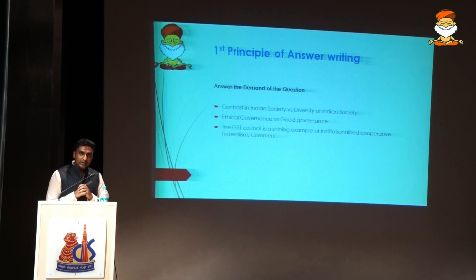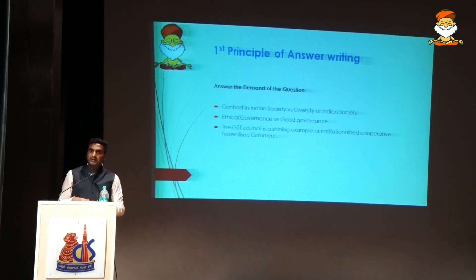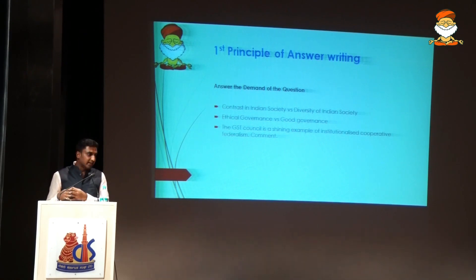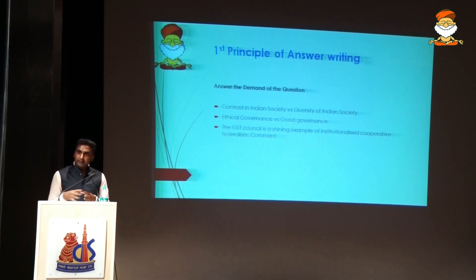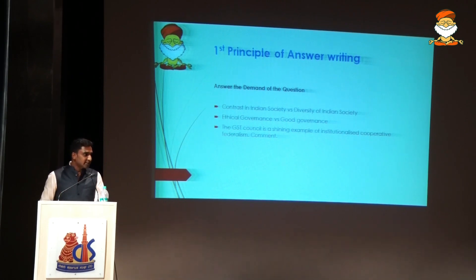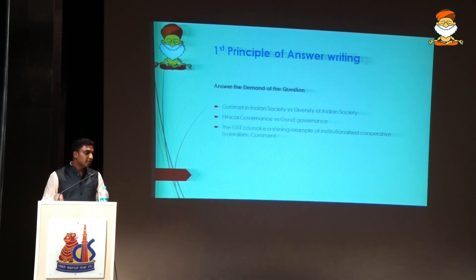Coming to interlinking of topics — this can only happen when you take the entire GS as one. We have four papers: GS1, GS2, GS3, and GS4. Always consider all four papers as one general studies paper with subtopics. Once you do that, it becomes very easy to interlink between GS1 to GS4, GS4 to GS2, GS2 to GS3.